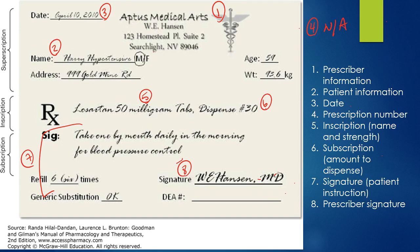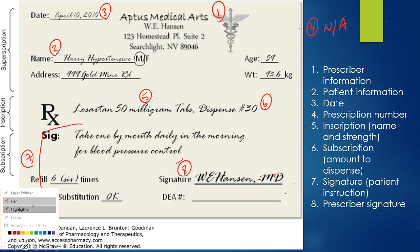Starting off, this is an example of what a prescription will look like when a patient hands you this in the pharmacy. You'll need to know the different components of what is on a prescription and to be able to answer questions on the PTCB exam — this information will be useful either way.